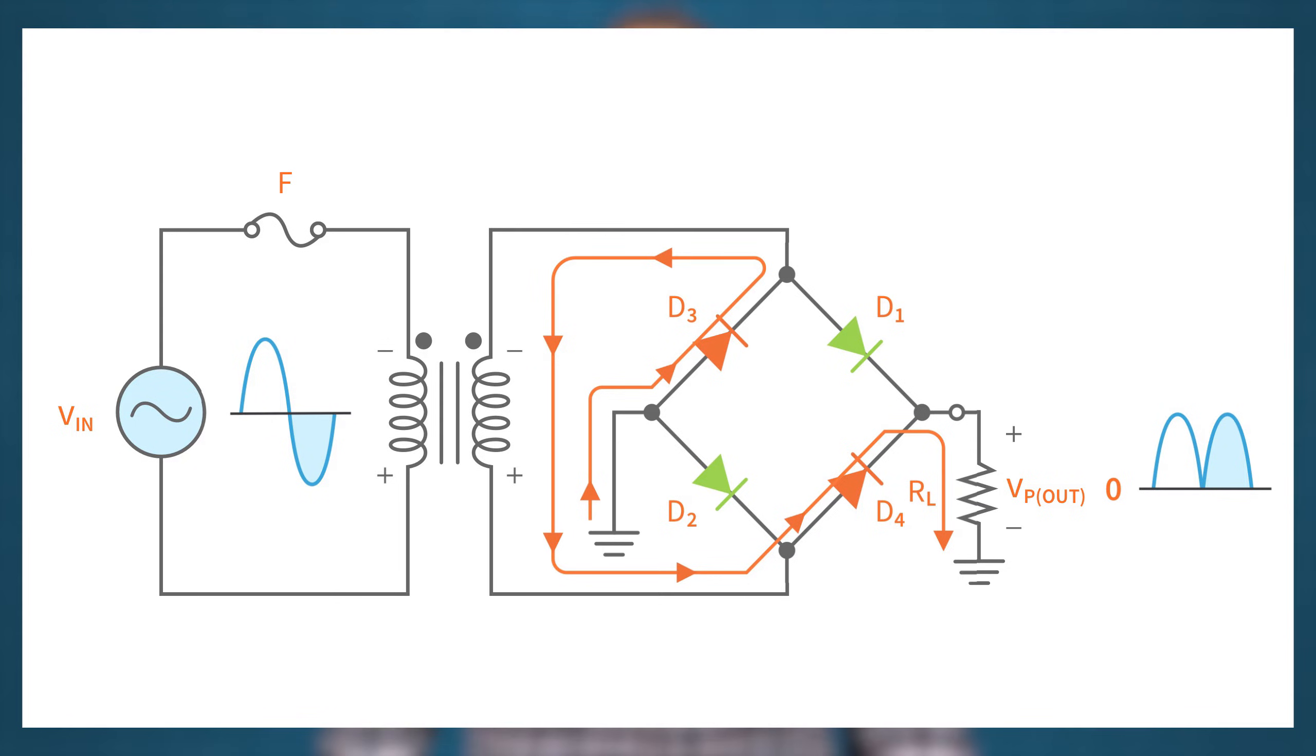The output of a bridge full-wave rectifier is DC, though it is still a pulsating DC. From the load, the current enters D3 through the ground and returns to the negative side of the secondary winding of the transformer. The output across the load after an entire cycle is a full-wave rectified output voltage.